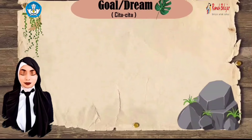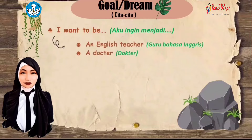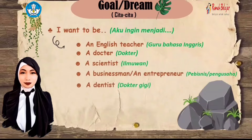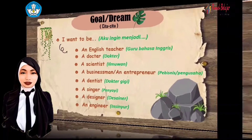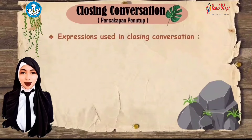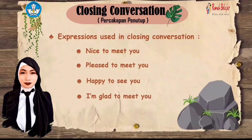You can also talk about your goals or dreams using 'I want to be [profession].' For example: 'I want to be an English teacher,' 'I want to be a doctor,' 'I want to be a scientist,' 'I want to be a businessman,' 'I want to be a dentist,' 'I want to be a singer,' or 'I want to be a designer.' To close your conversation, use: 'Nice to meet you,' 'Pleased to meet you,' 'Happy to see you,' 'I'm glad to meet you,' or 'How do you do?'